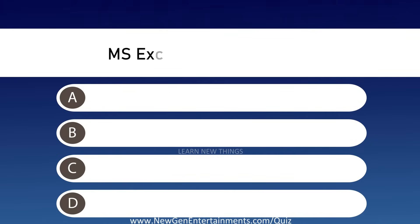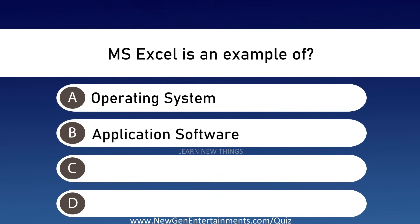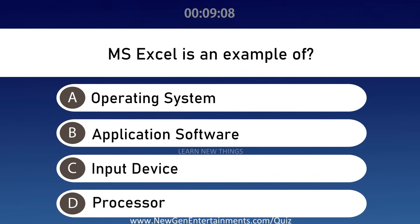MS Excel is an example of — Options are A: Operating System, B: Application Software, C: Input Device, and D: Processor. Answer is Option B, Application Software.